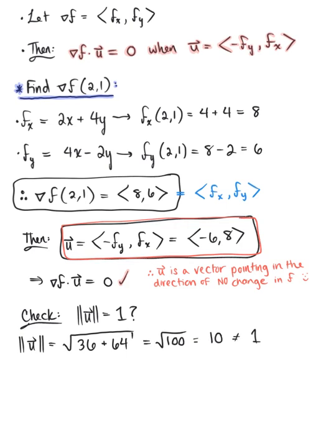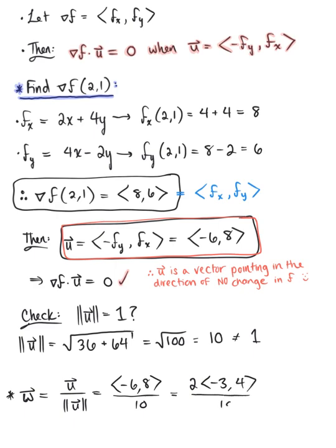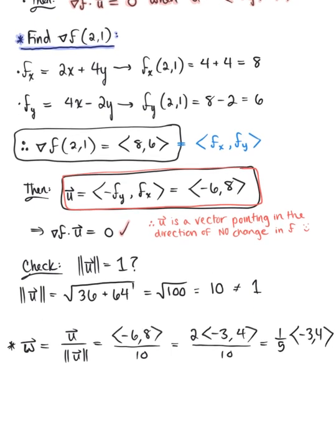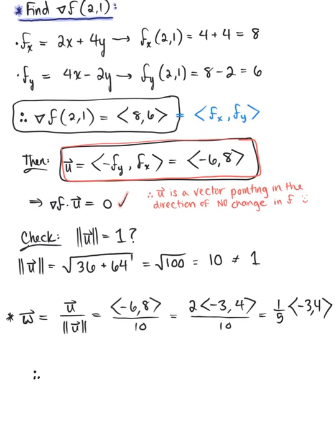We need to find a unit vector pointing in the direction of vector u. We'll call this vector w, defined as vector u divided by its magnitude. So we have ⟨−6, 8⟩ divided by 10. We can factor out a scalar multiple of 2: 2 times ⟨−3, 4⟩ divided by 10, which simplifies to the beautiful final answer: one-fifth times the vector ⟨−3, 4⟩. This vector w is one possible unit vector pointing in the direction of no change along the level curve.